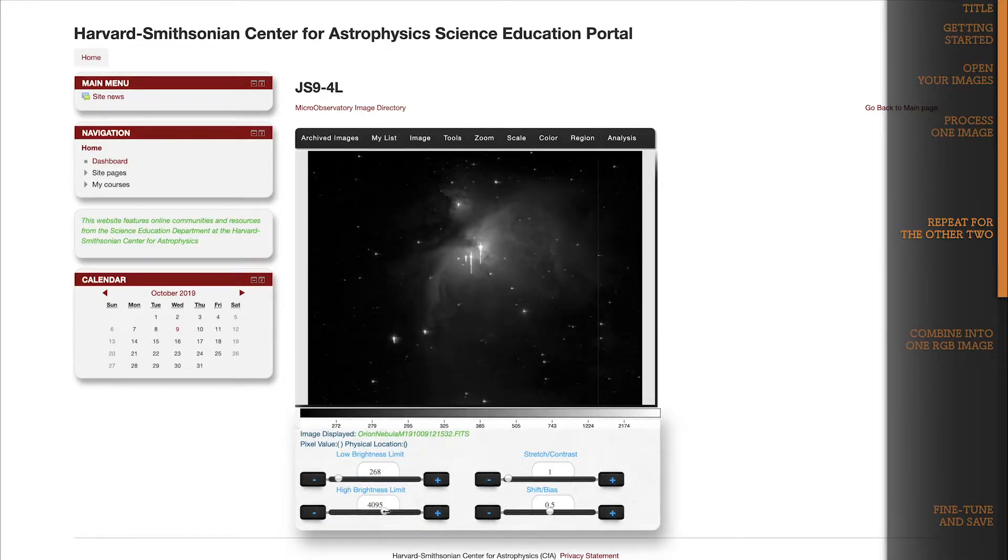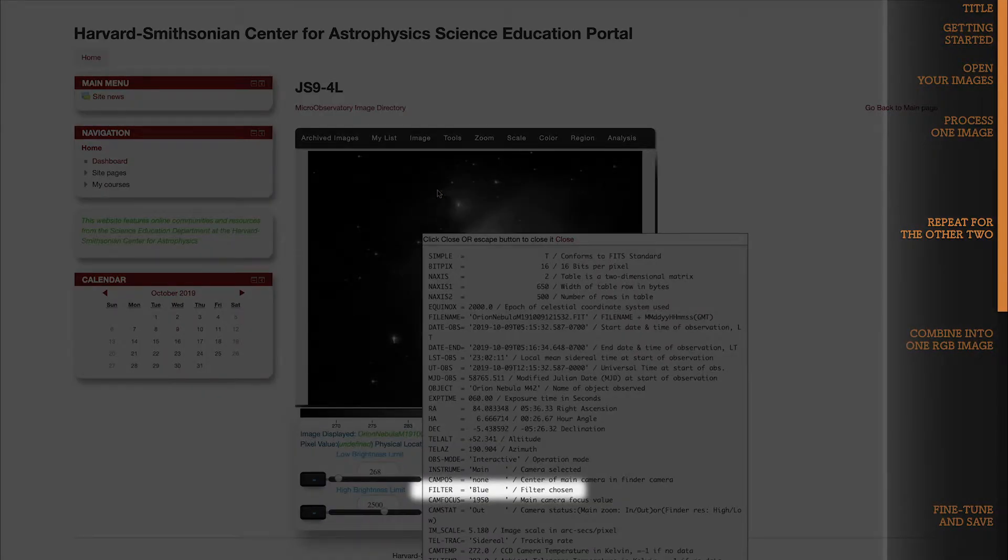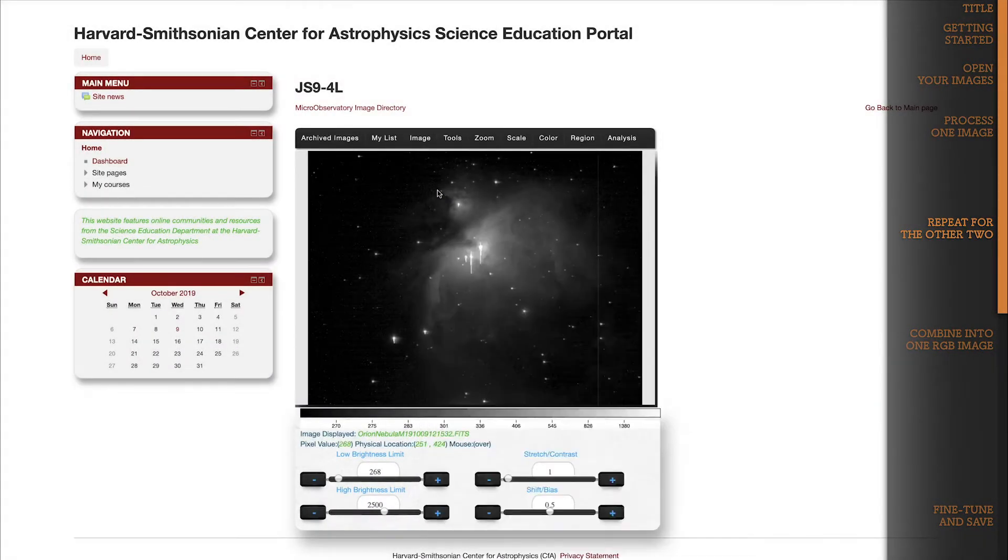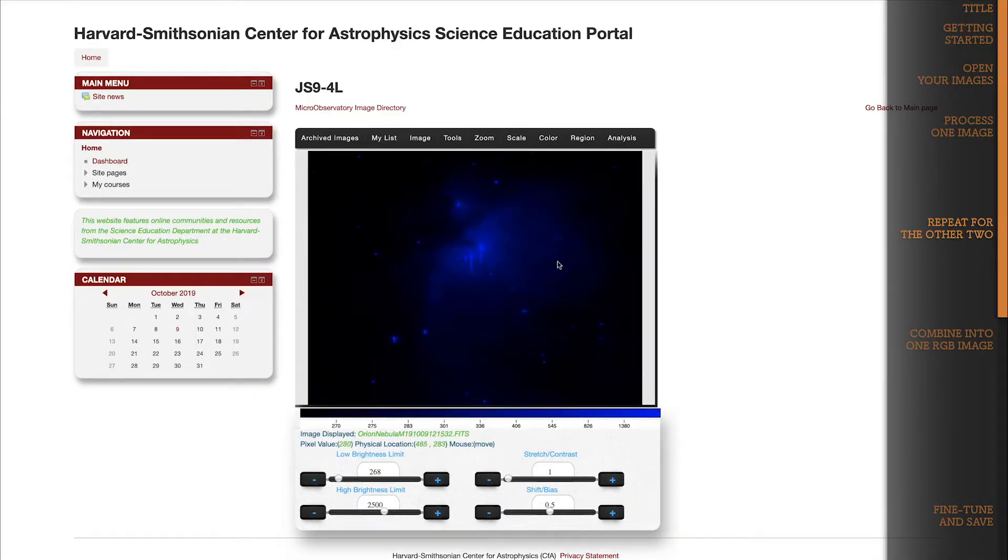Now, one thing that you could probably figure out by process of elimination, if we've already processed our red image and our green image, then this one must be our blue image, right? Let's check the FITS header anyway just to confirm. And there it is, filter equals blue. Set the color map to blue, and now our blue filtered image has a black to blue color scale.